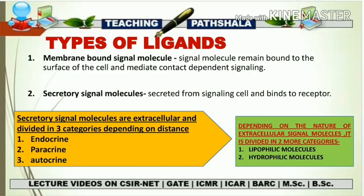Now the next topic is the types of ligands. There are many ways to categorize ligands, but here we cover two to three bases. The first type is the membrane-bound signal molecule, and the second is the secretory signal molecule. From the name, we can say that membrane-bound signal molecules remain bound to the cell surface that is producing them, and they do signaling via a contact-dependent pathway. This kind of ligand will not travel to some other location — they remain bound to the cell surface and function through contact-dependent signaling.